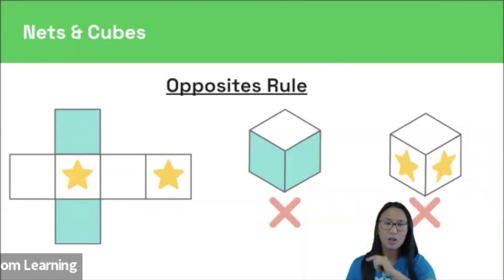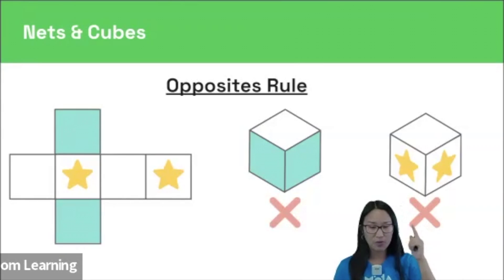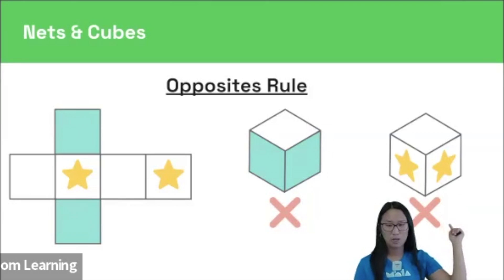This is when faces that should be opposite each other are shown next to each other in a cube. So in this example here, the turquoise faces should be opposite each other rather than next to. And then same for the stars. These stars should be opposite each other rather than next to each other.